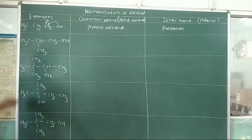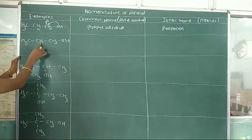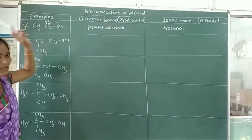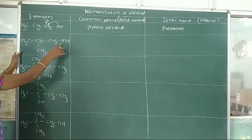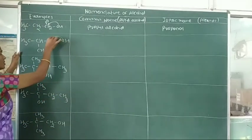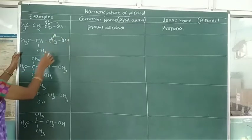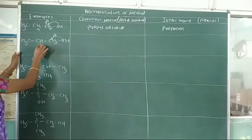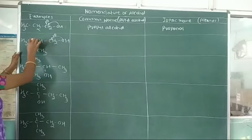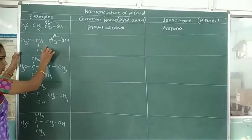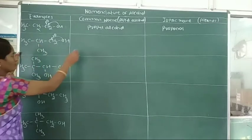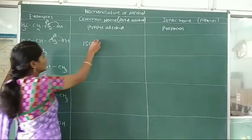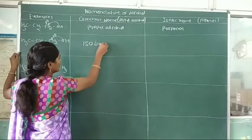Second example: CH3-CH(CH3)-CH2OH. The common name of this compound — here the hydroxy group is attached to a primary carbon atom, but another methyl group is attached to the secondary carbon atom. Therefore the prefix 'iso' is used. With 4 carbon atoms present, the common name is isobutyl alcohol.